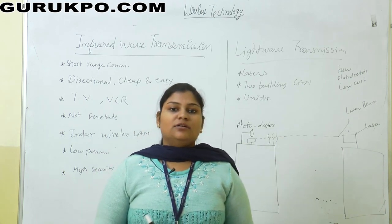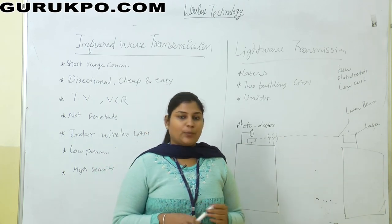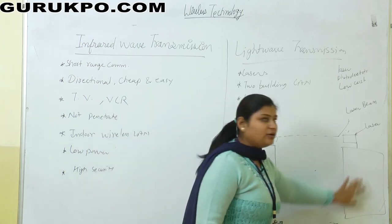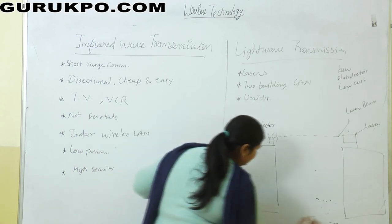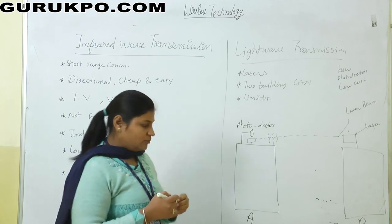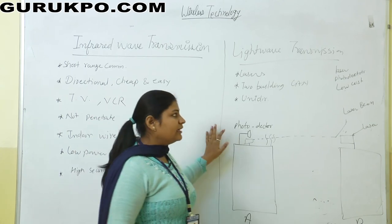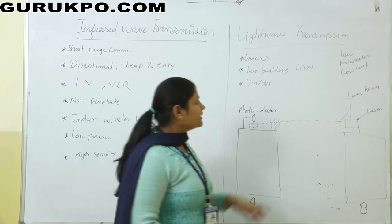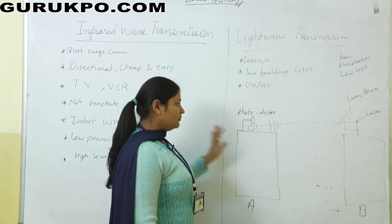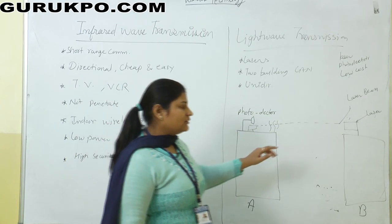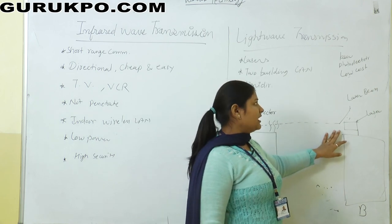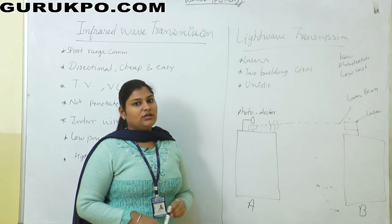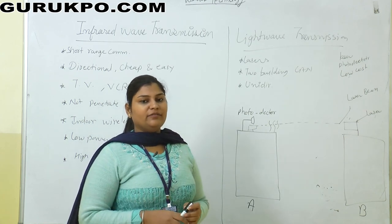Unidirectional means the signal is sent in one direction. For example, suppose there are two buildings — Building A and Building B. Both buildings should have their own photo detector and laser. When one building sends data, the other building must have its own laser and photo detector to receive it. It is very low cost to make a LAN connection between two buildings using light wave transmission.